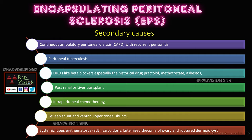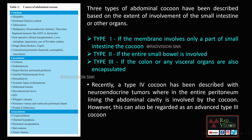Encapsulating peritoneal sclerosis can occur as primary or secondary. Secondary causes include continuous ambulatory peritoneal dialysis with recurrent peritonitis, peritoneal tuberculosis, drugs like beta-blockers such as practolol and methotrexate, asbestosis, post-renal or liver transplant, intraperitoneal chemotherapy, leveen shunts, ventriculoperitoneal shunts, and systemic diseases like SLE and sarcoidosis. You can pause the slide to see all the different causes, uncommon causes, and associations.